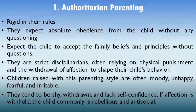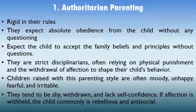In authoritarian parenting, the parents are very rigid in their rules. They make the rules and those rules should be followed by the children — no flexibility. They expect absolute obedience from the child without any questioning. There is no two-way communication; it is only one-way communication. Whatever the parent says, the child should obey, and the child is expected to accept the family beliefs and principles without questions. Parents are very strict disciplinarians, often relying on even physical punishment and the withdrawal of affection to shape their child. Sometimes they quarrel with or stop speaking to children, thinking this corrects behavior — but that is wrong.